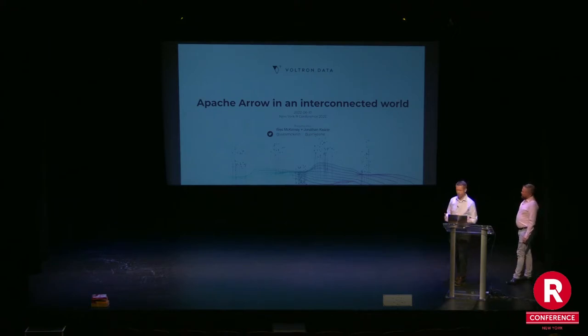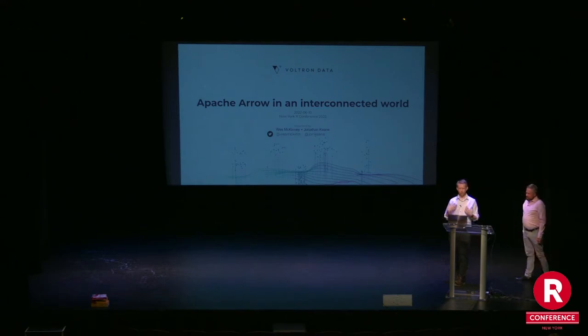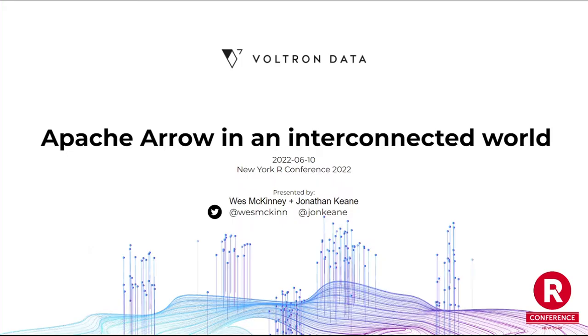We started the Arrow project, and so every year we come back to share how things have evolved to make data processing faster and easier in R, and to make it easier to work with massive data sets. So this year the theme is about how Arrow is evolving as technology to make R more connected with the broader data ecosystem and the so-called modern data stack.